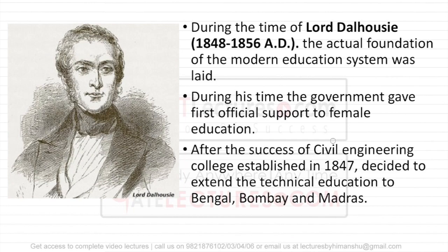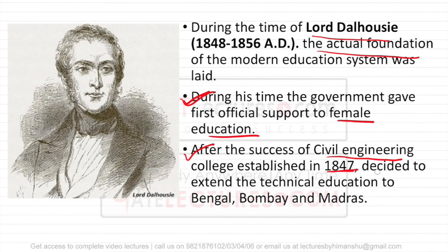During the time of Lord Dalhousie, another Governor General, he laid the actual foundation of modern education in India. During his time, the government gave official support for female education for the first time — earlier it was on paper but not officially open. After the success of the Civil Engineering College established in 1847, he extended technical education to Bengal, Bombay and Madras.